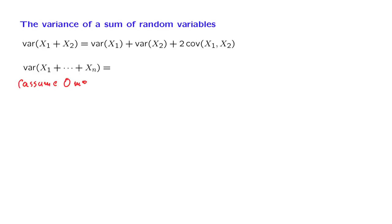But the final conclusion will also be valid for the case of non-zero means. Since we have assumed zero means, the variance is the same as the expected value of the square of the random variable involved.